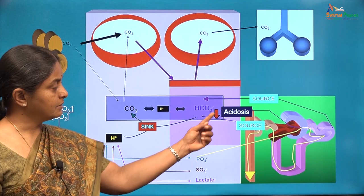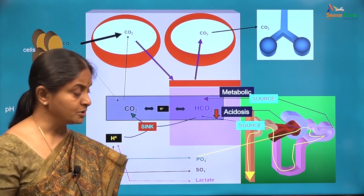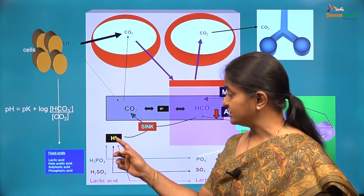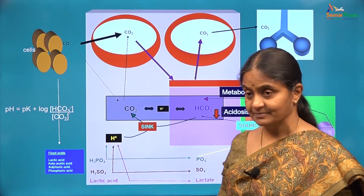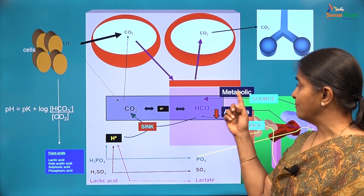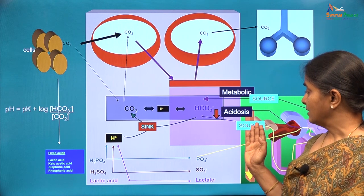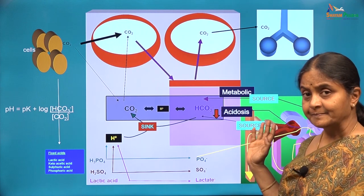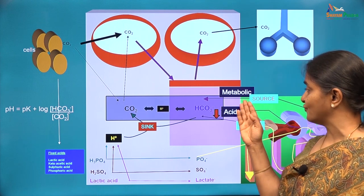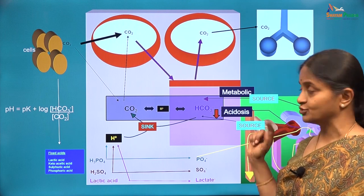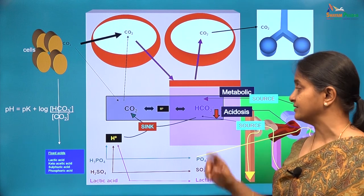A reduction in plasma bicarbonate is termed metabolic acidosis. The term probably came about because one primary cause of a reduction in plasma bicarbonate is consumption by fixed acid protons, and fixed acids are formed due to metabolic processes. That is why the term metabolic acidosis has come to describe all conditions where there is a reduction in plasma bicarbonate. Decreased formation of bicarbonate in the kidney is also classified under metabolic acidosis. A special term for those conditions is renal tubular acidosis — either proximal or distal renal tubular acidosis. All of these are classified under metabolic acidosis.